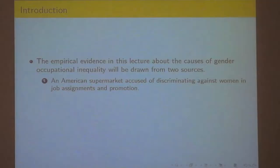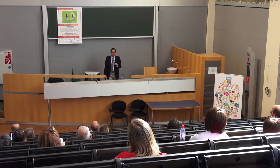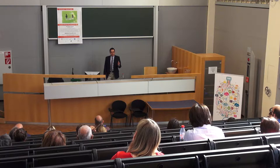It's really an insight into what goes on in a company. The second source comes from controlled laboratory experiments run in Paris in November and December at the University of Paris the First. In those experiments, we were looking at gender differences in occupational choice based on picking a risky job versus a safe or secure job, where the risk is the risk of being unemployed.